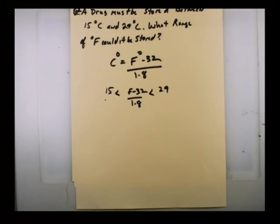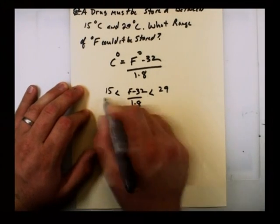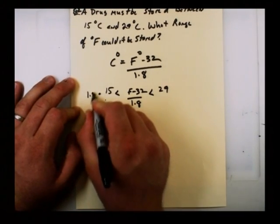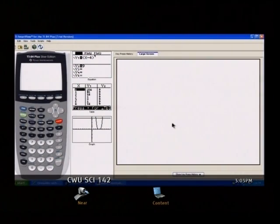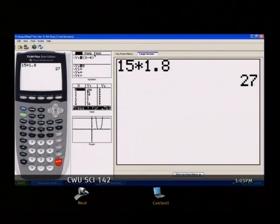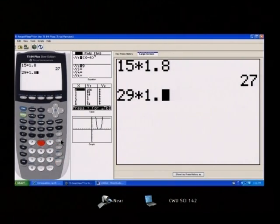How do we solve this, or how do we get our correct range? Same rules apply. The only thing we really have to be concerned about is if we run into multiplying or dividing by a negative. So multiply both ends by 1.8. Go ahead and whip out your calculator. Let's do that calculation real quick. So on the left-hand side, we had 15 times 1.8. On the right-hand side, we had 29 times 1.8. Let's go ahead and flip back. So that gives us a range of 27 less than F minus 32, which is less than 52.2.